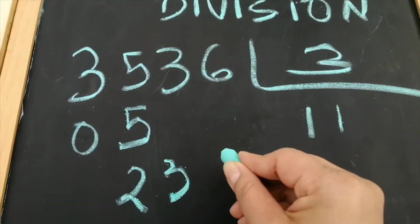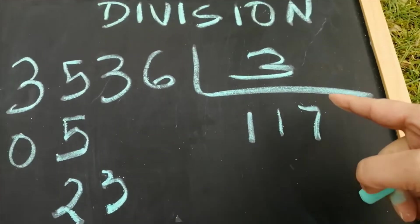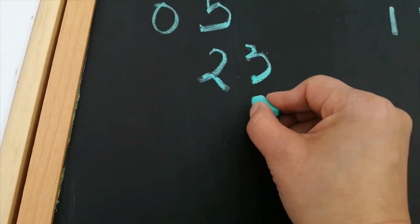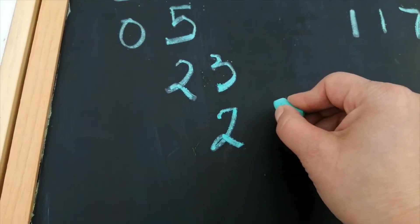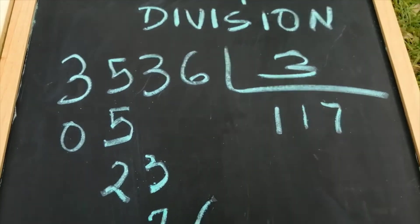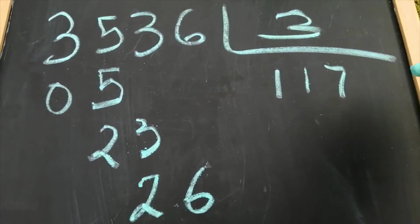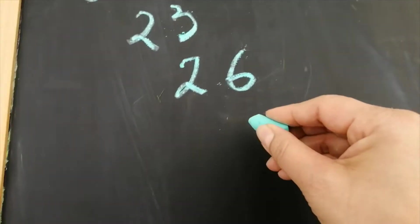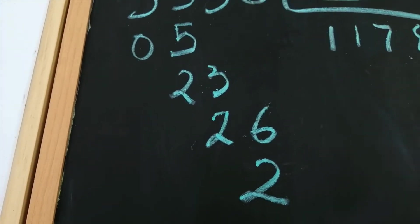El 3 en el 23 — 7. 7 por 3, 21. A 23, 2. Bajo a la cifra siguiente que es el 6. ¿Cuántas veces está el 3 en el 26? 8 veces. 8 por 3, 24. A 26, 2.